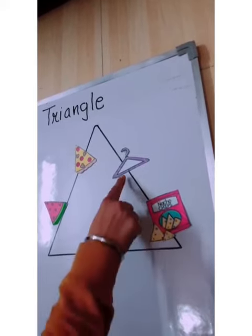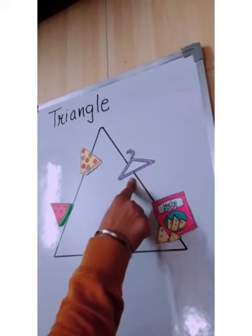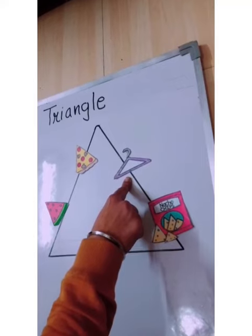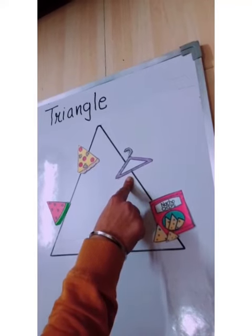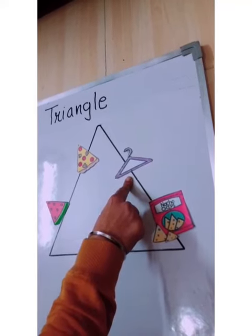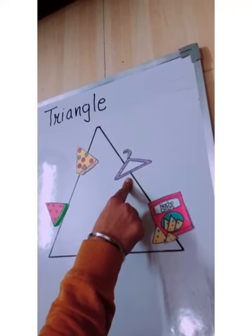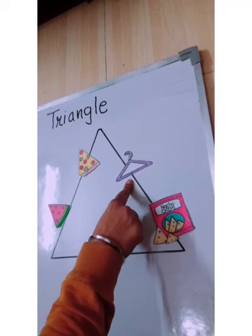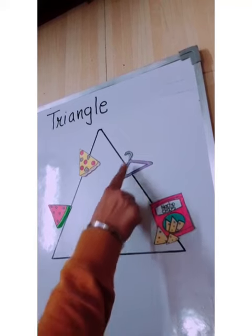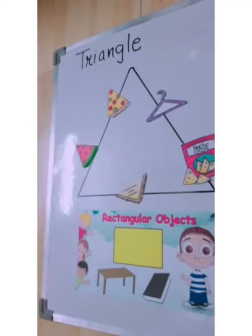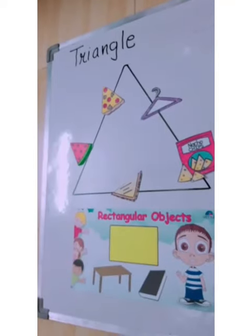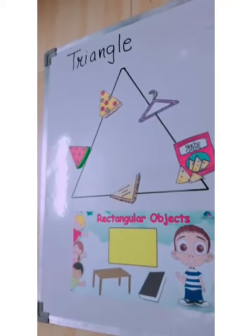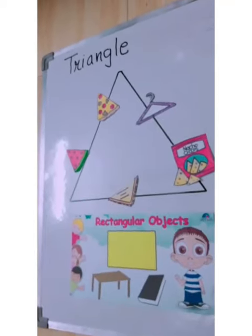Now, this is a hanger. Mama hangs the clothes on the hanger. Do you know the shape of hanger is triangle shape. Okay kids, bye-bye. Recapitulate the shapes.